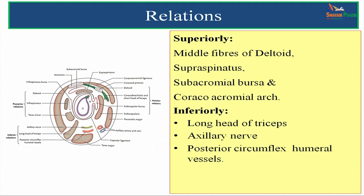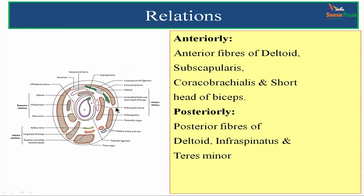Coming to the relations of the shoulder joint all around it: superiorly it is related to the middle fibers of deltoid, supraspinatus, subacromial bursa, and the coracoacromial arch. Inferiorly it is related to the long head of triceps, axillary nerve, and posterior circumflex humeral vessels. Anteriorly it is related to the anterior fibers of deltoid, subscapularis, coracobrachialis, and short head of biceps. Posteriorly it is related to the posterior fibers of deltoid, infraspinatus, and teres minor.